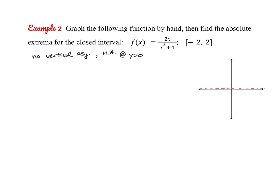We have endpoints on our graph. Plugging in f of negative 2 gives negative 4 fifths, and f of positive 2 gives positive 4 fifths. So we can plot those endpoint values.